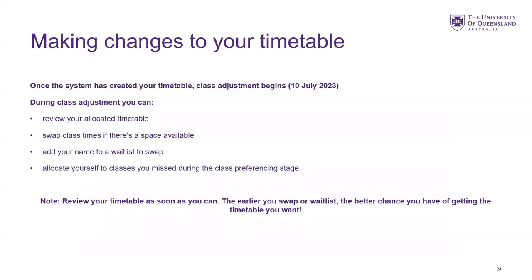That's how you preference your timetable. After the 10th of July, you can make changes to your timetable — this is when you review your allocated timetable. If there are spaces available, you can swap. If a preferred time is full, you can join a waitlist, which is why it's important to act as soon as the adjustment period opens. You can also allocate yourself to classes you missed during the preferencing stage, for example if you had a late enrolment. Make sure you review your timetable as soon as you can — the earlier you swap or waitlist, the better chance you have of getting the timetable you want.